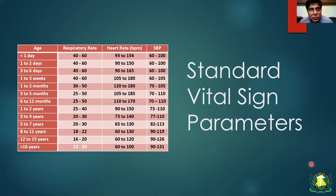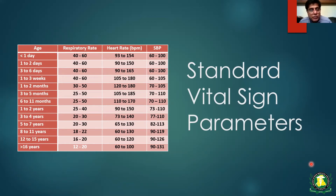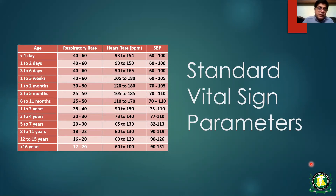This slide provides average respiratory rates, heart rates, and systolic blood pressure by age. For a neonate less than one day old, the average respiratory rate is 40–60, heart rate varies from 93 to 154, and systolic blood pressure from 60 to 140. Each age group has different normal values — babies have much higher heart rates, and as we grow older our heart rates slow down. Always remember you cannot treat a one-day-old the same way you treat a one-year-old because their normal values vary by age.